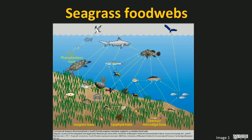The epiphytes are grazed on by small fish and crustaceans, while the microalgae and detritus — the dead matter in the system — feed fish and other organisms like sea cucumbers or beche de mer. These animals that graze on the lower parts of the food web are in turn grazed on by other organisms.